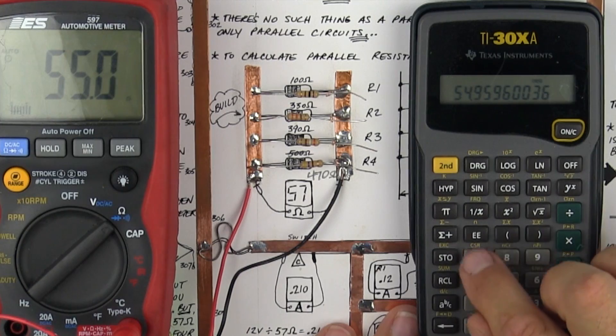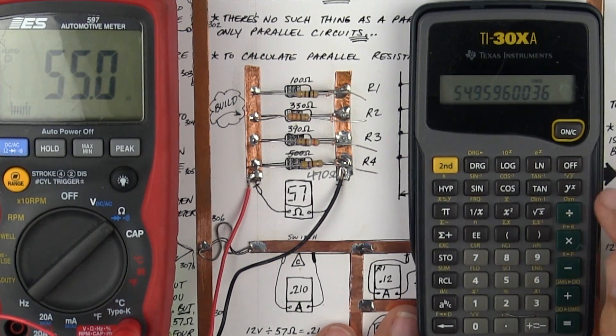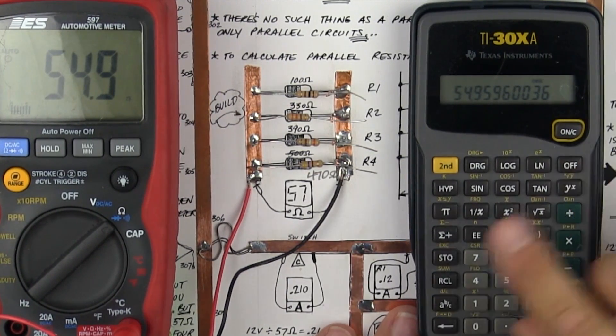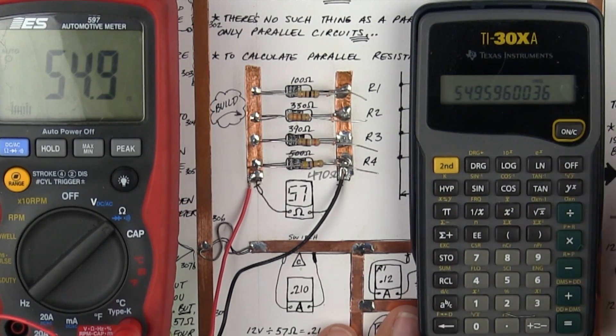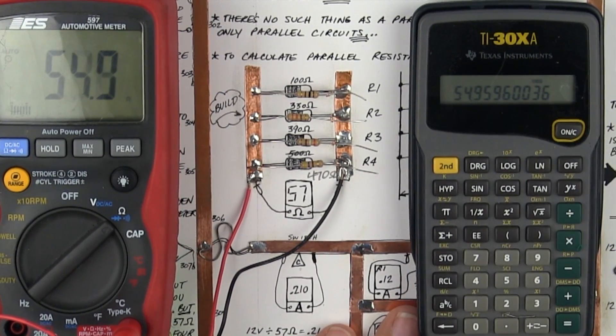So that's the math. There's your 1 over x button. Make sure you use it so that the only thing you change from the previous lessons about series resistors is you do the series resistance equation but now you add in the 1 over x button. Alright, let's move on.